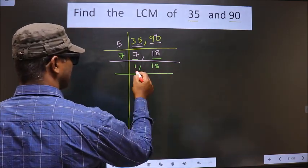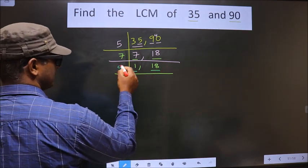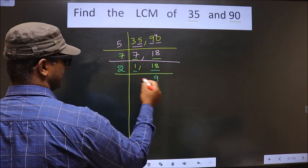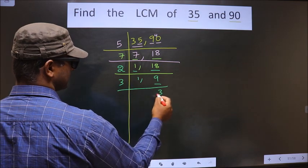Now, here we got 1, so focus on the next number, that is 18. 18 is nothing but 2 times 9 is 18. Now we have 9. 9 is nothing but 3 times 3 is 9.